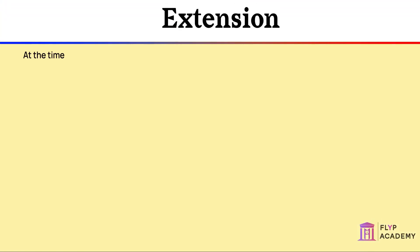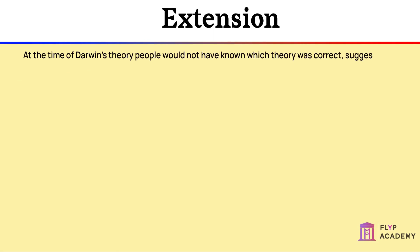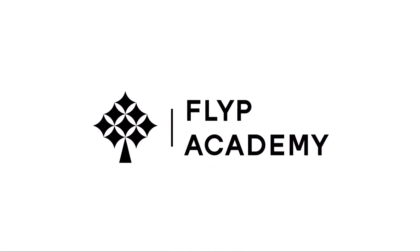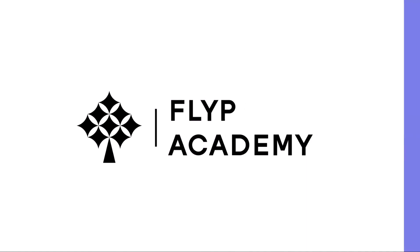Extension: At the time of Darwin's theory, people would not have known which theory was correct. Suggest why. There was very little evidence for both theories, as not a lot was known about inheritance.